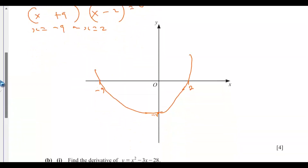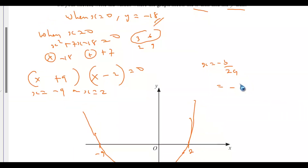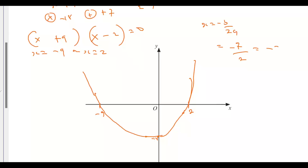If you need to get the line of symmetry, you can either write the expression in completing-the-square form, or use x equals minus b over 2a. Here b equals 7, so x equals negative 7 over 2 — that is negative 3.5. The line of symmetry is at x equals negative 3.5.